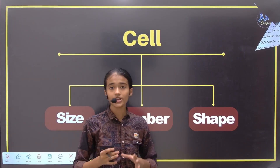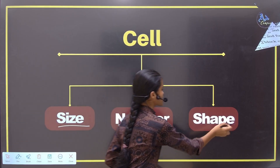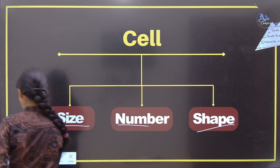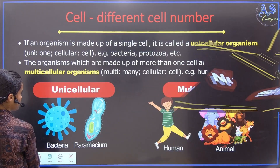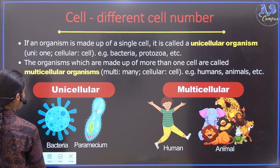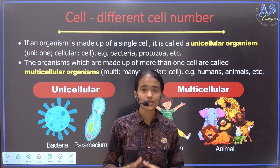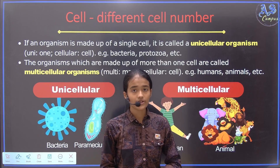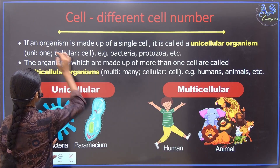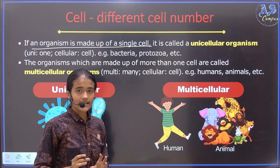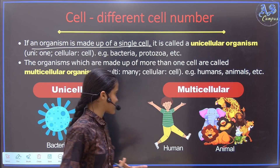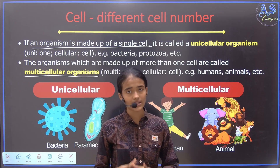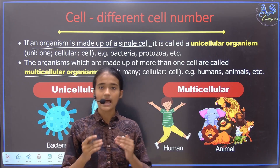Cells are different on the basis of their size, number, and shape. In this slide we are going to discuss the difference of cells on the basis of their number. There are two kinds of organisms. First, unicellular organisms — these organisms are made up of a single cell, for example bacteria, protoplasm, etc. The next one is multicellular organisms — these organisms are made up of more than one cell, for example human beings, animals, etc.